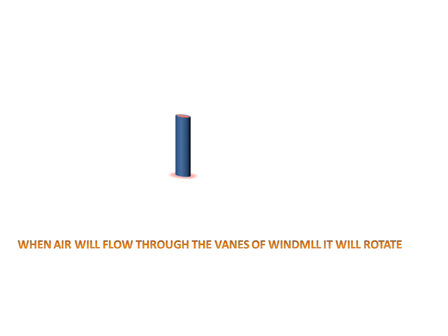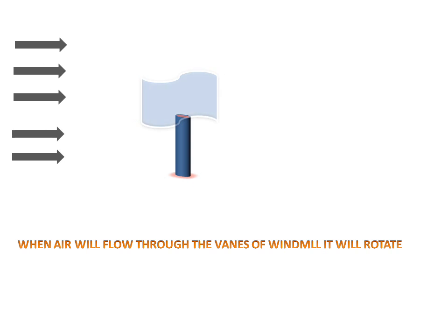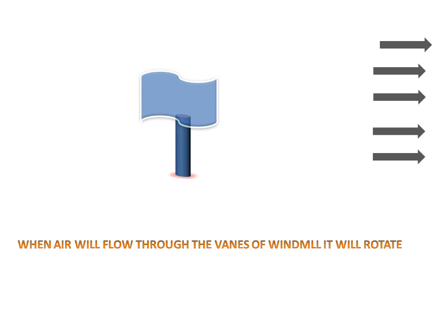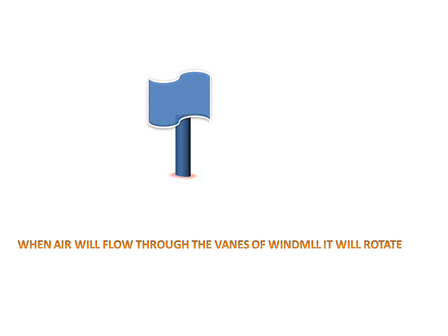Today we will discuss the vertical windmill turbine. When air flows through the vanes of the windmill, it will rotate. This is a 7S rotor — an S-type rotor. When air passes through the rotor, it will rotate the shaft. Now see the whole image of the vertical windmill turbine.